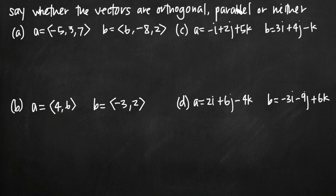Parallel vectors are going to be the same as two parallel lines, and it doesn't matter which direction the vectors are going in — if they're going in the same direction or the opposite direction, they're still parallel to one another in the same way that two lines are parallel to each other. And then obviously if the vectors are anything besides parallel or orthogonal, then we say that it's neither parallel nor orthogonal and we'll give an answer of neither.